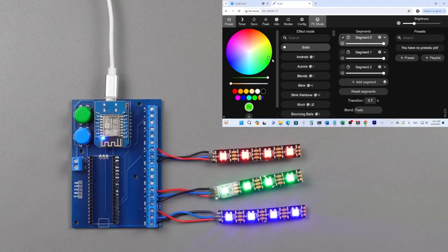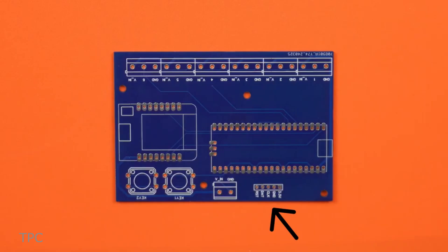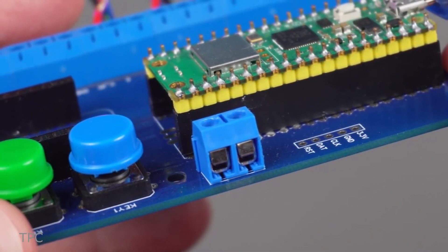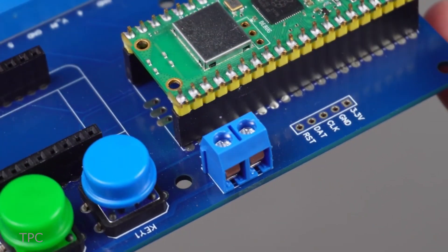Additionally, a Bluetooth module can be added for more control options. Both the Pico and the LEDs can be powered with a 5V input.